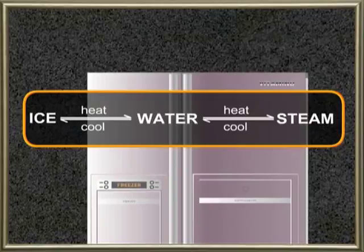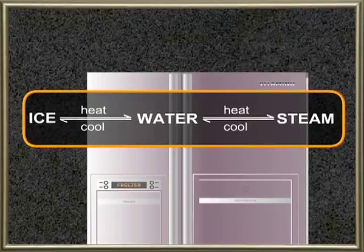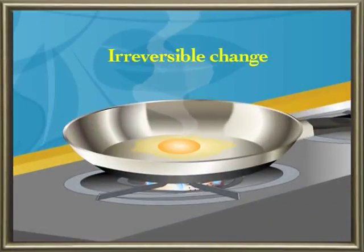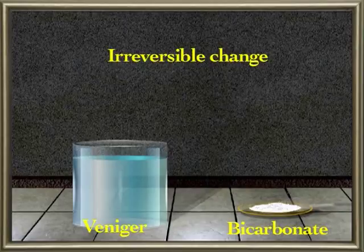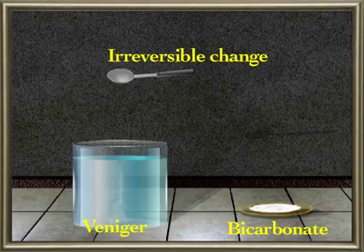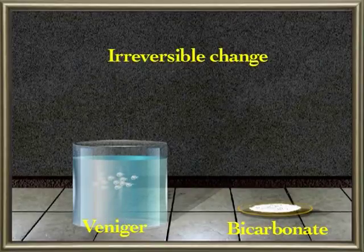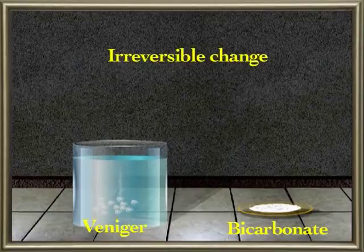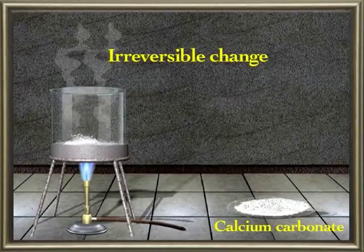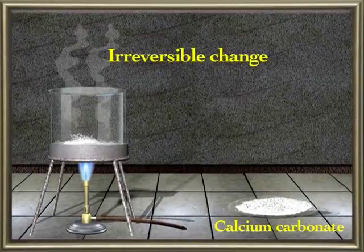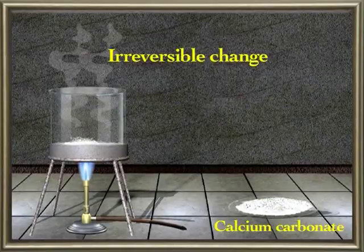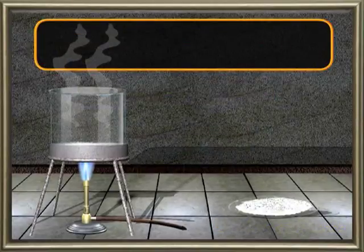If water vapor is cooled sufficiently, it converts to liquid water, and on further cooling, water freezes to give ice. An irreversible change is a permanent change that cannot be undone. For example, heating a substance while cooking is an irreversible change. When vinegar is mixed with bicarbonate of soda, we can observe the release of carbon dioxide in the form of bubbles — here we cannot get back the original substances. In another example, if we heat solid calcium carbonate, evolution of gas takes place.